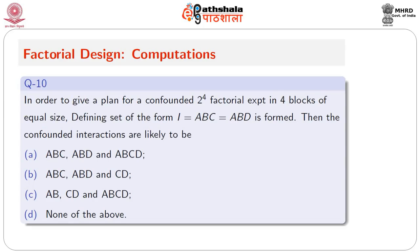To give a plan for a confounded 2⁴ factorial in four equal-sized blocks, the defining set I = ABC = ABD is formed. The confounded interactions are then: if we have ABC and ABD, their generalized interaction is CD. So we know straight away the three interactions being confounded are ABC, ABD and CD. Checking the options: ABC, ABD, CD is correct. Option B (ABC, ABD, ABCD) is wrong. Option with CD and ABCD is also wrong. Therefore B is the correct answer.